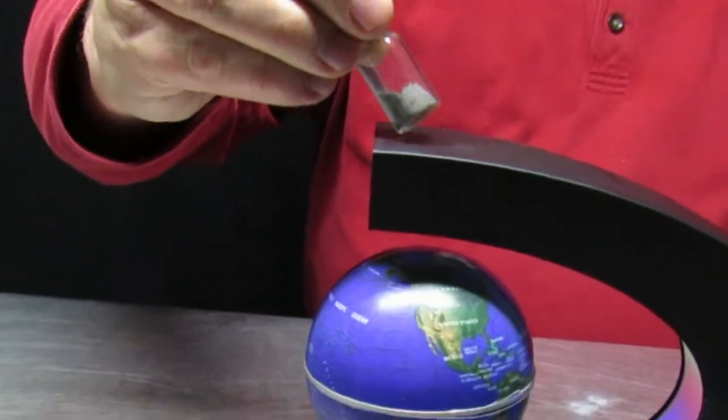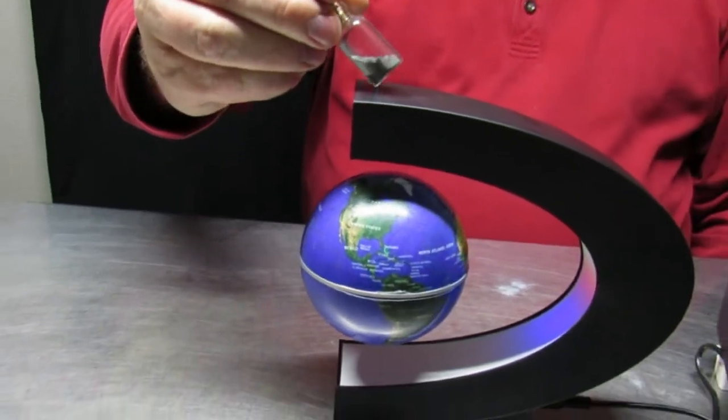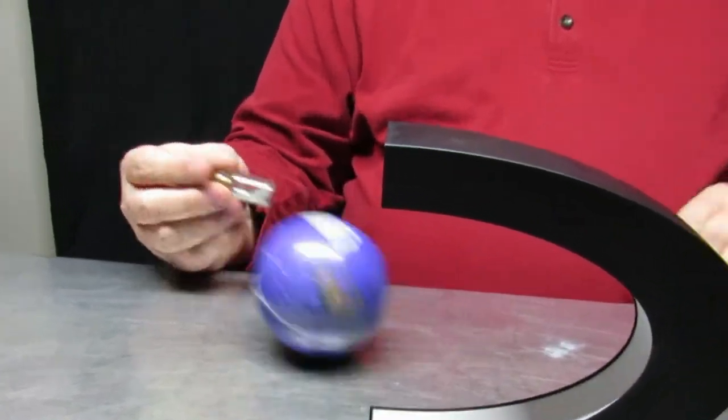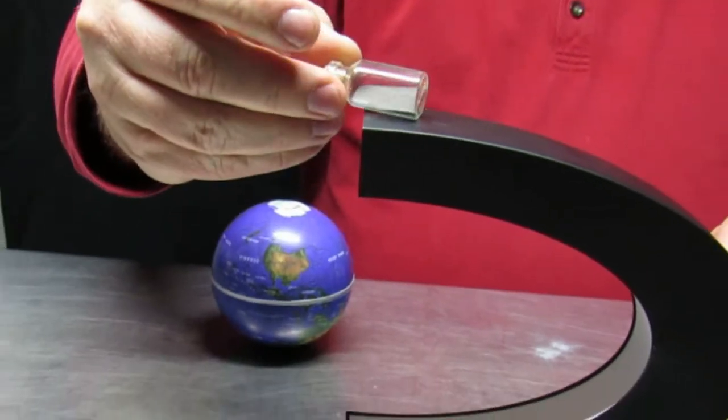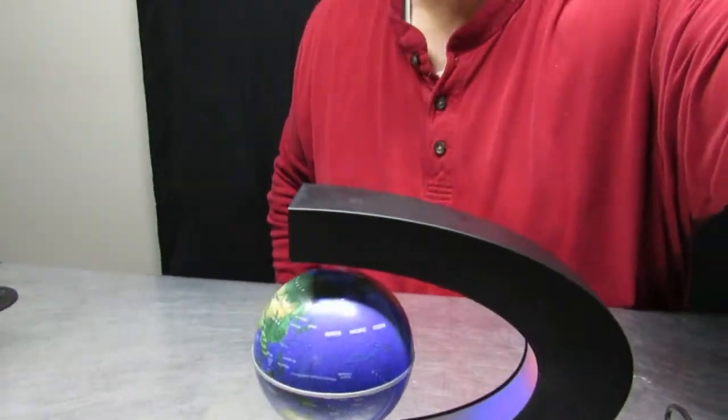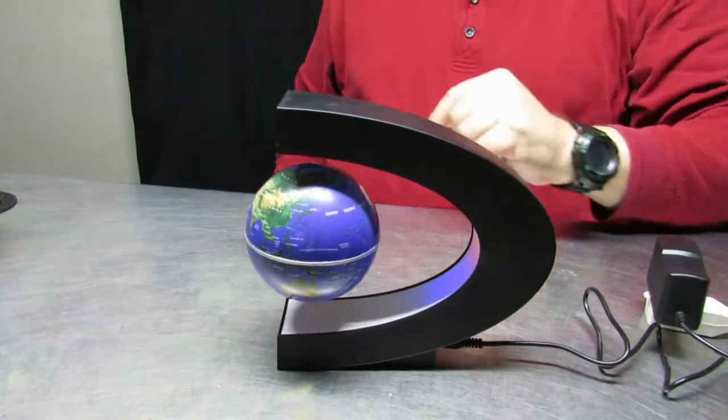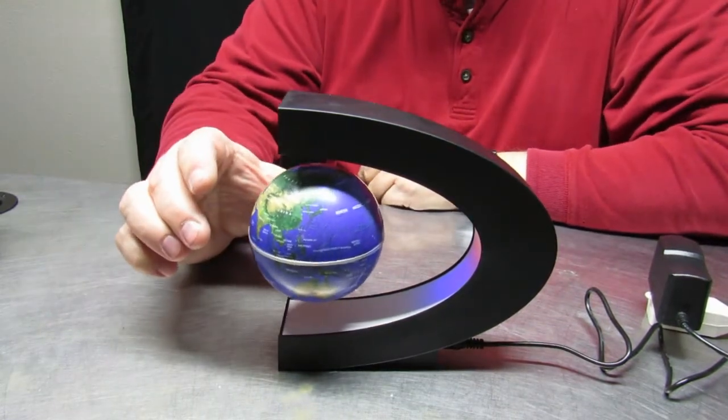In the base or the holder for the globe, you can see that when it's on there's a magnetic field associated with it, but when it's turned off and the globe falls apart, there's no magnetic lines. So there's some kind of electromagnet to help hold it in place.